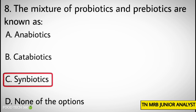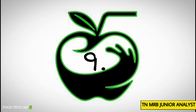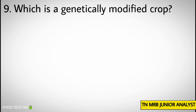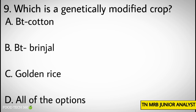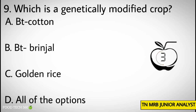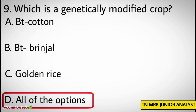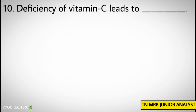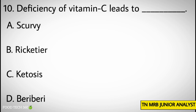Question number nine: Which is a genetically modified crop? Options: A) Bt Cotton, B) Bt Brinjal, C) Golden Rice, D) All of the options. Correct answer: D) All of the options. Question number ten: Deficiency of Vitamin C leads to dash. Options: A) Scurvy, B) Kwashiorkor, C) Ketosis, D)... Correct answer: A) Scurvy.